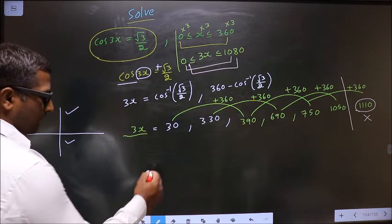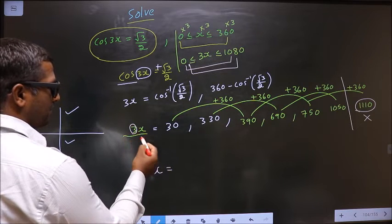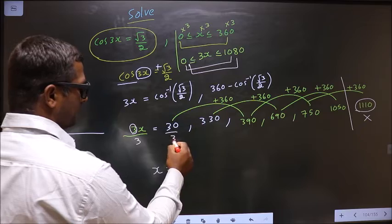Okay. Now to get the values for x I should remove this 3. For that I divide by 3.